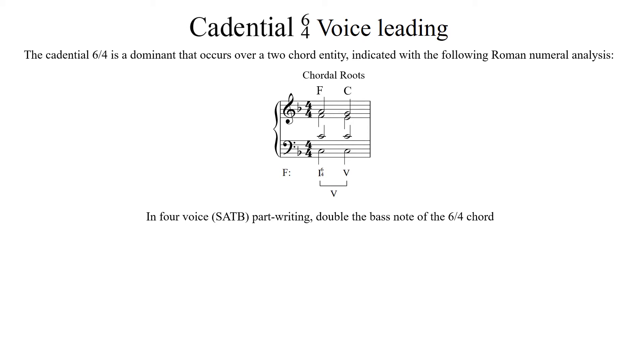Also notice that the cadential 6-4, the 1-6-4, is metrically accented when compared to the 5 chord, as the 6-4 occurs on beat 1, which is metrically stronger than beat 3 in the given meter.